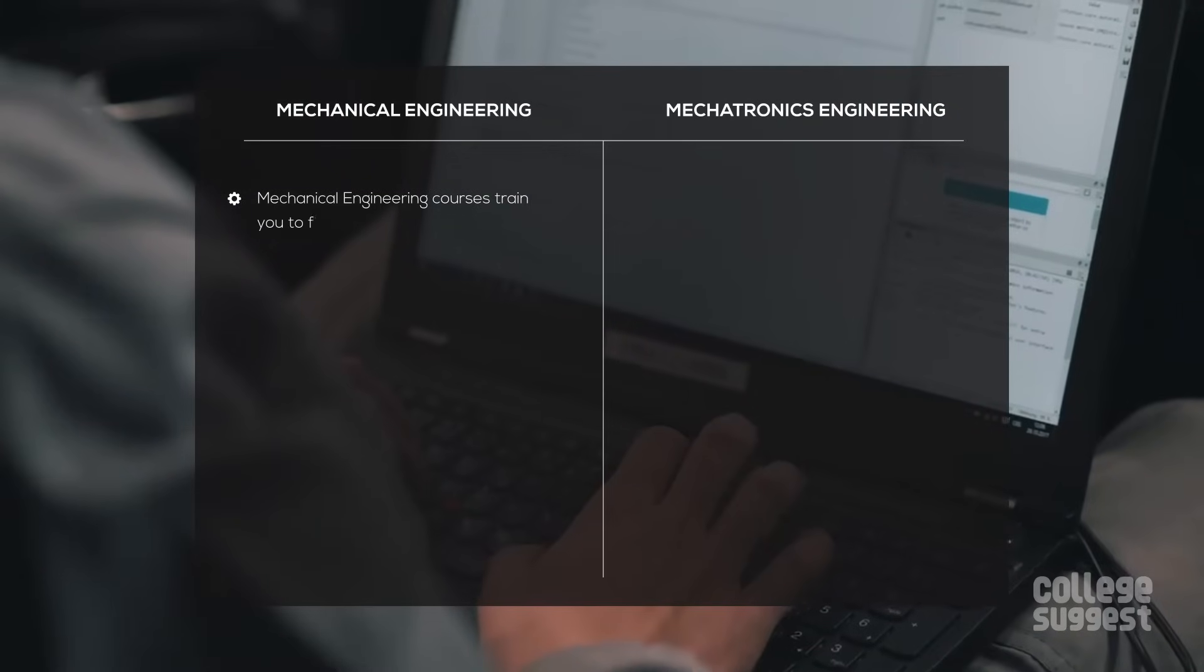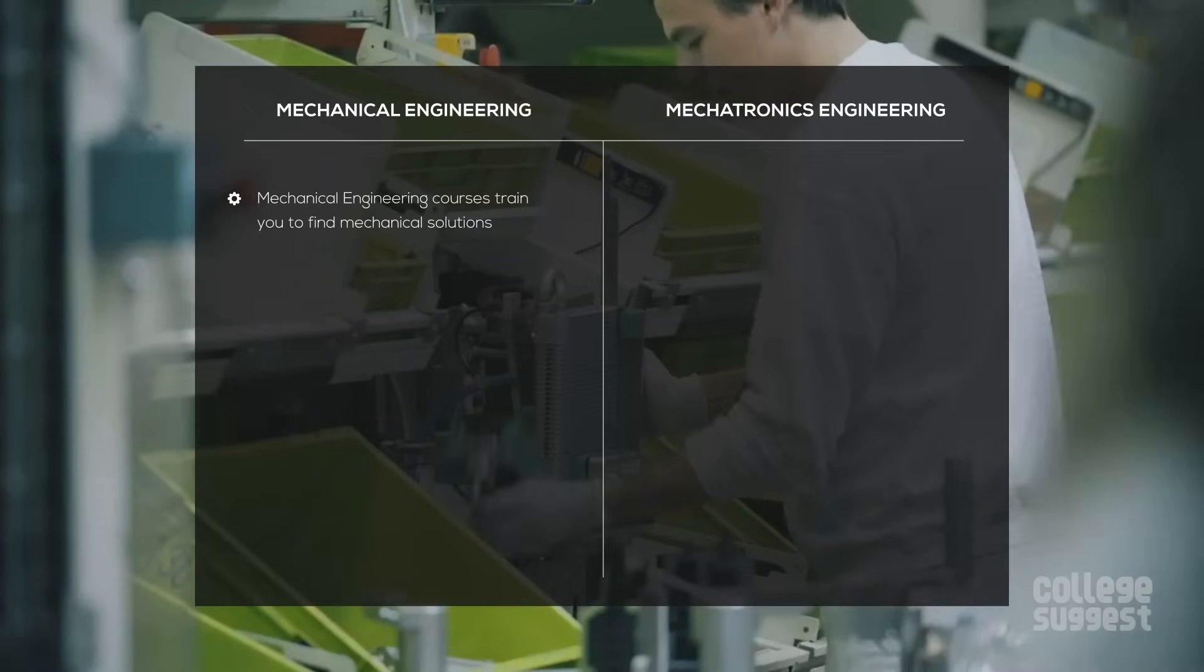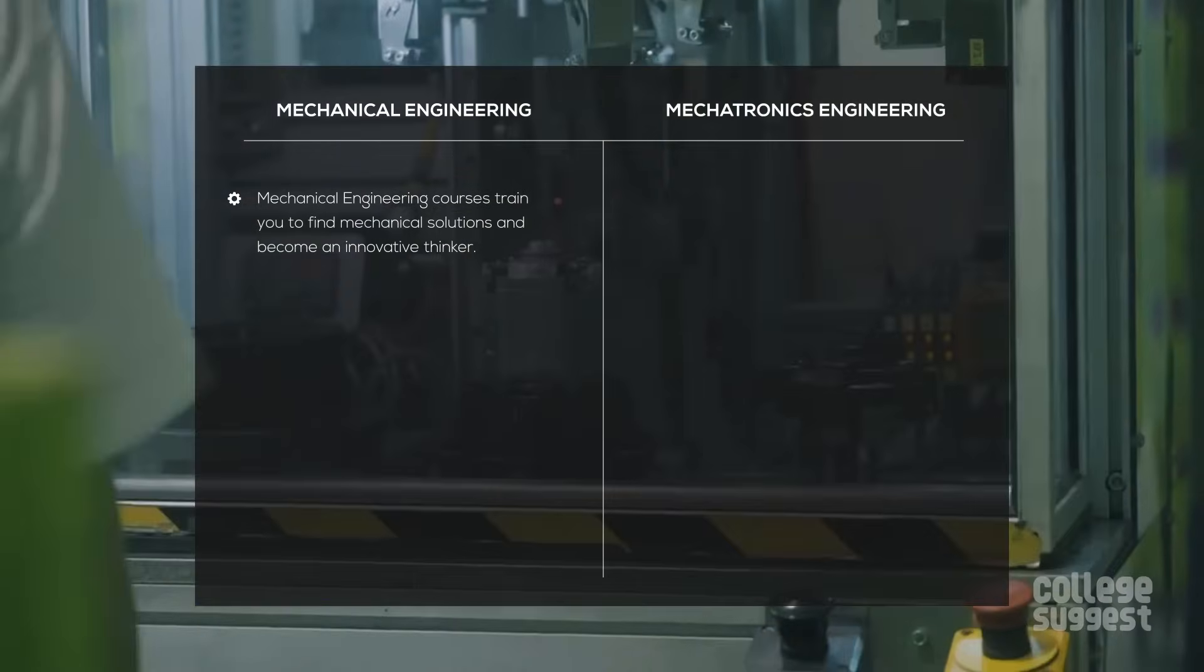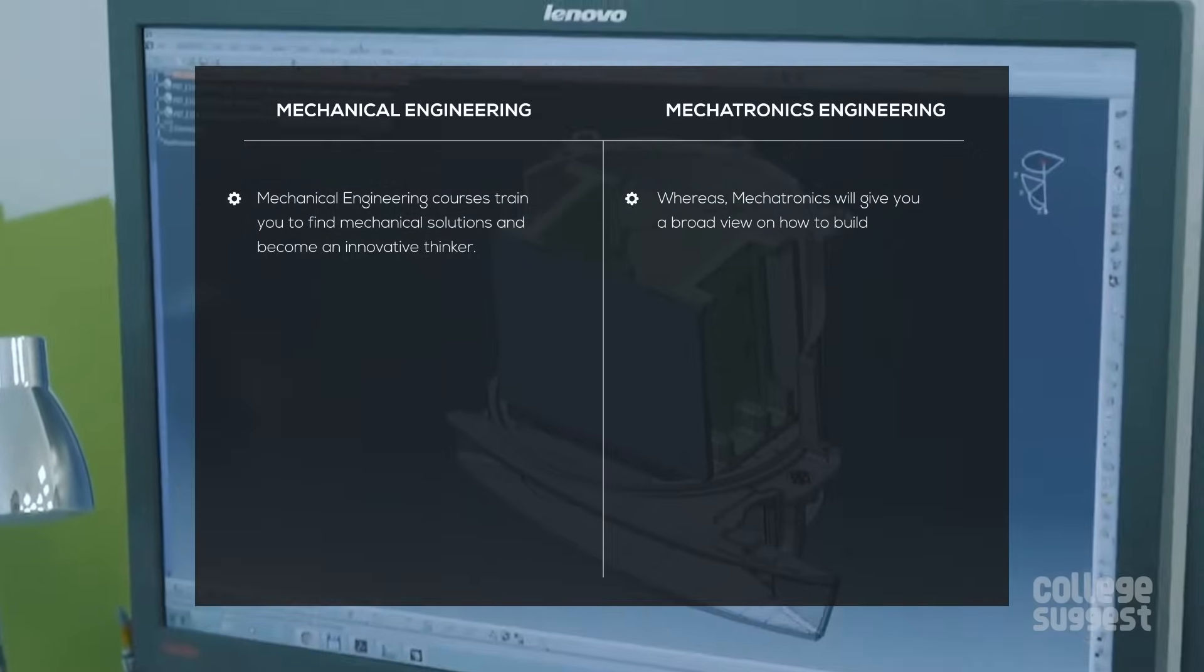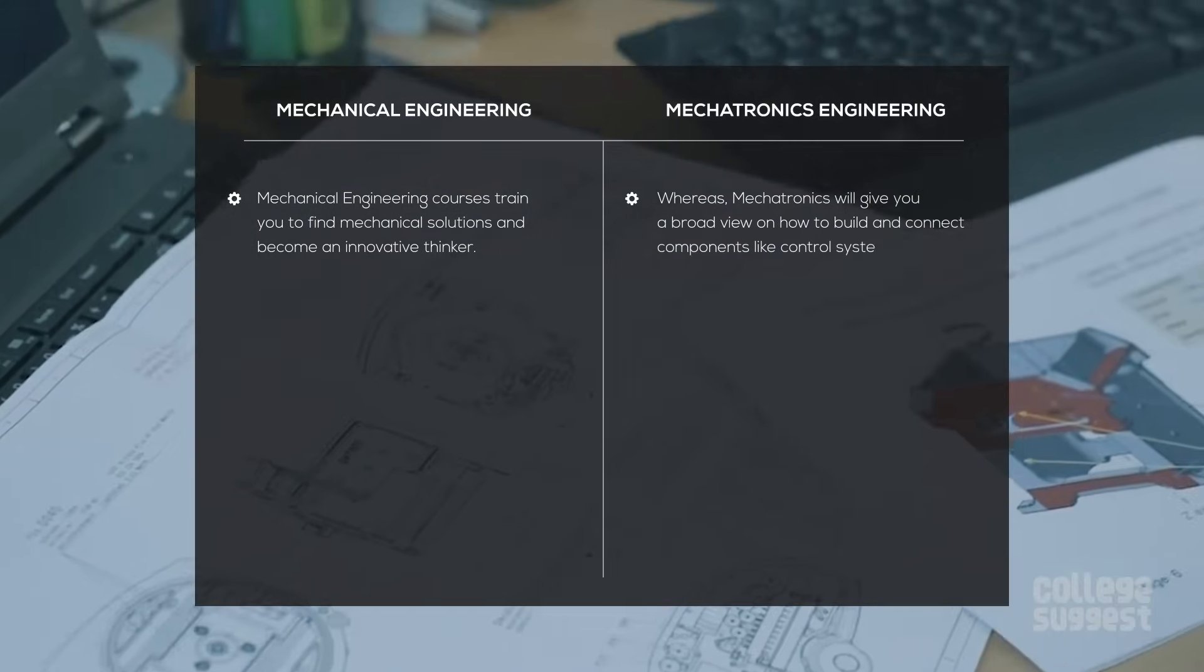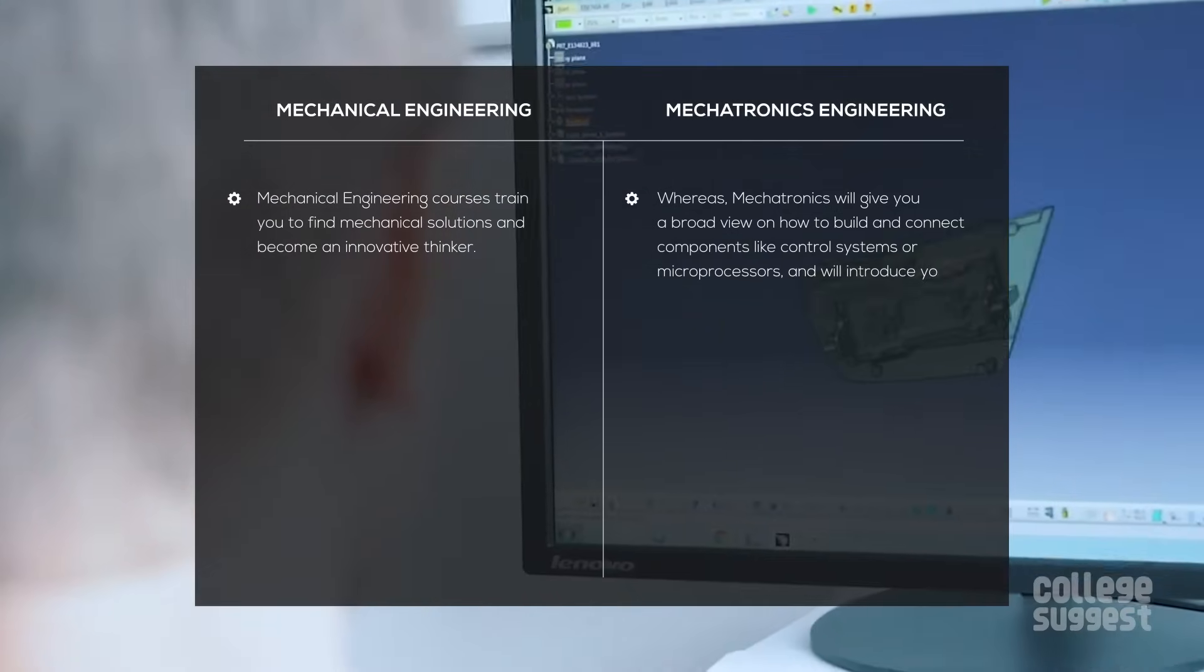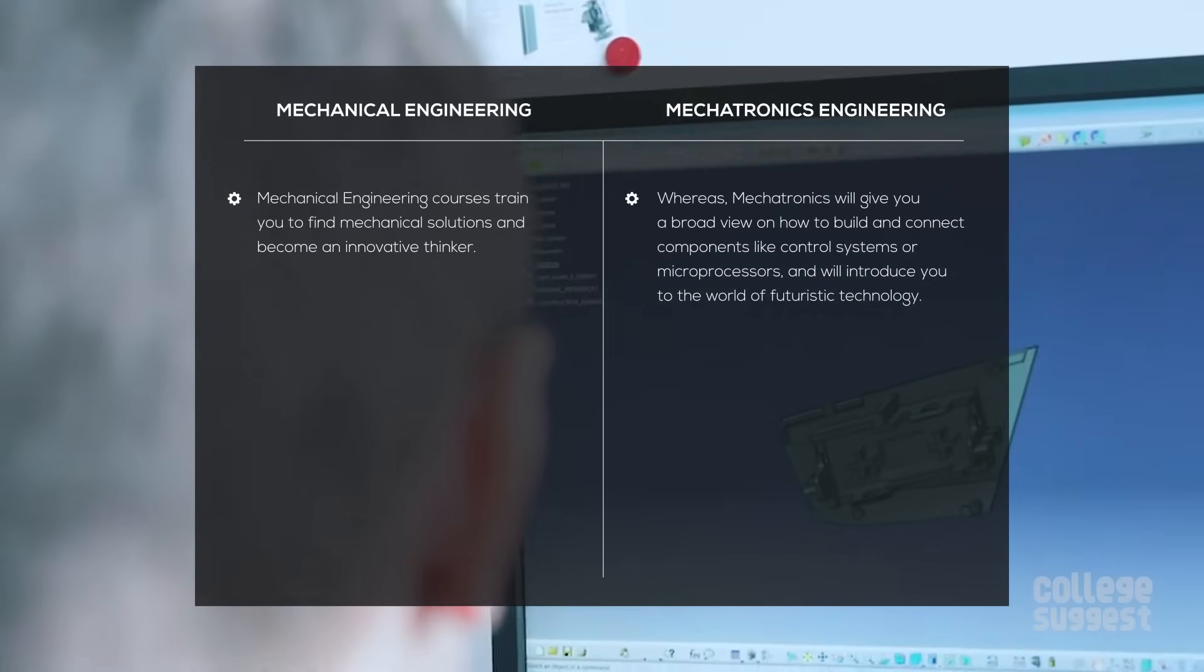Mechanical engineering courses train you to find mechanical solutions and become an innovative thinker. Whereas mechatronics will give you a broad view on how to build and connect components like control systems or microprocessors and will introduce you to the world of futuristic technology.